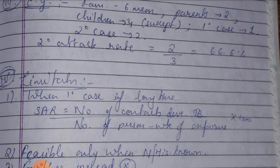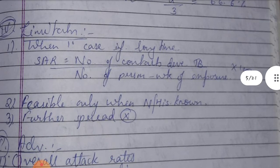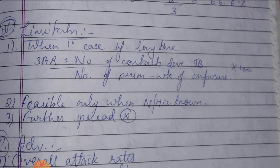The fourth limitation: the first limitation is when the case infection has been a long time. The second is it is feasible only when the natural history is still known. The third is when the spread is not known. If the infection has been a long time, the formula is the number of contacts developed daily upon the number of persons minus weeks of exposure.